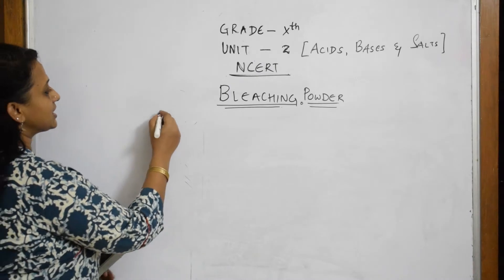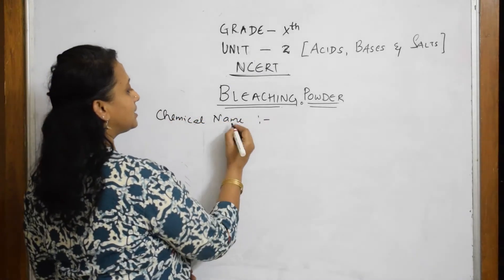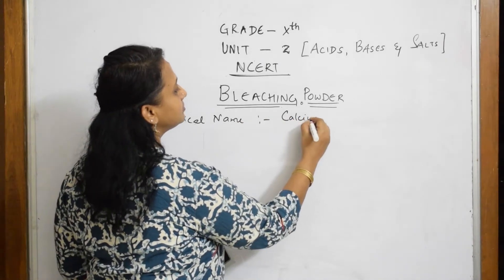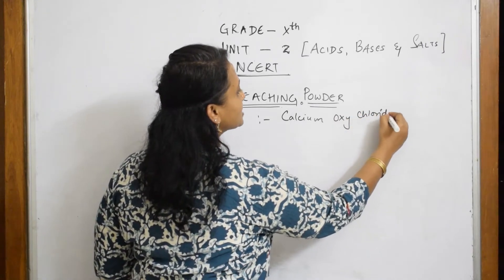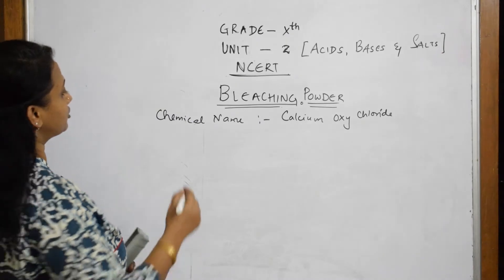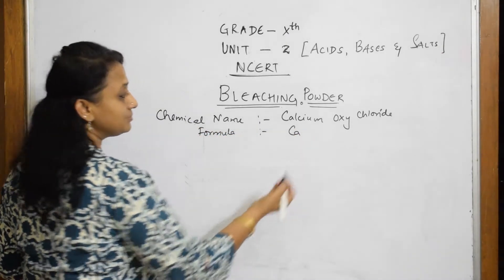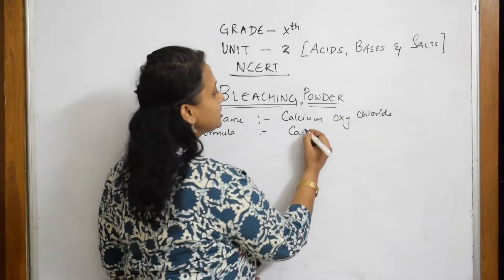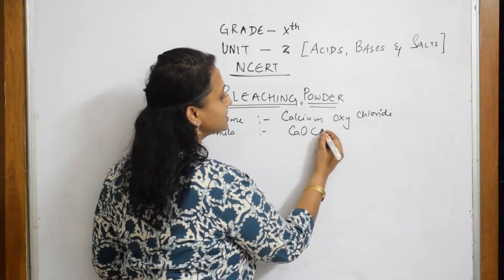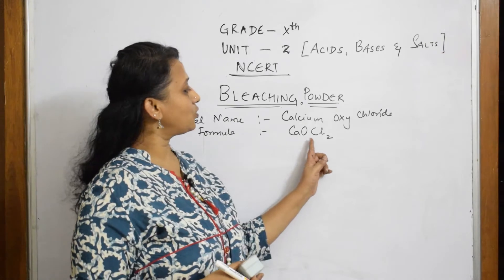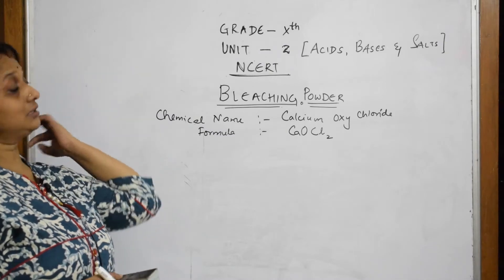The chemical name of bleaching powder is calcium oxychloride. The formula is CaOCl₂ — Ca for calcium, O for oxy, Cl for chloride — so CaOCl₂ is the formula for bleaching powder.